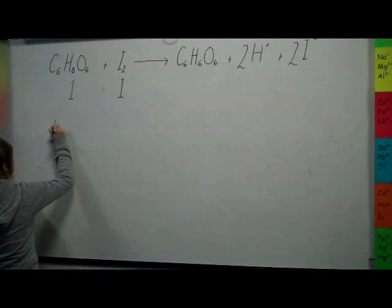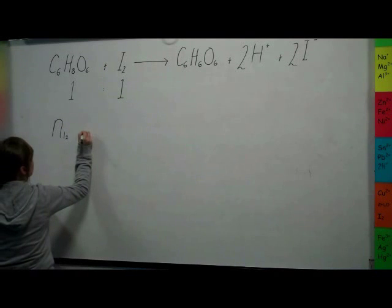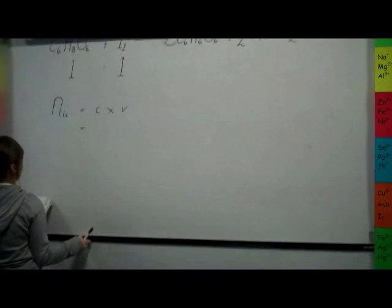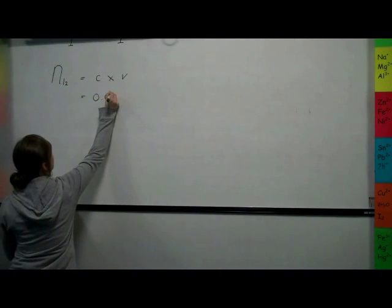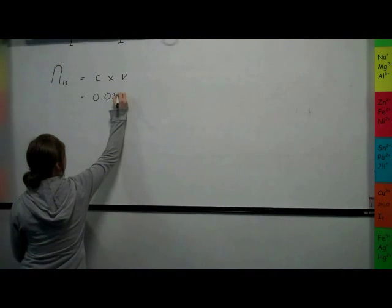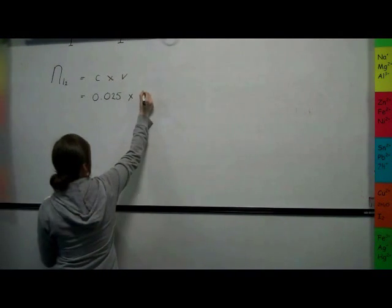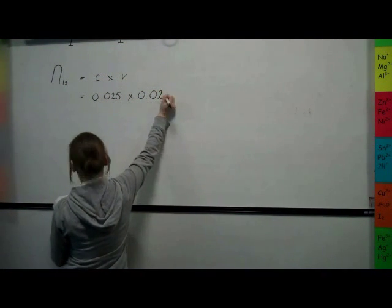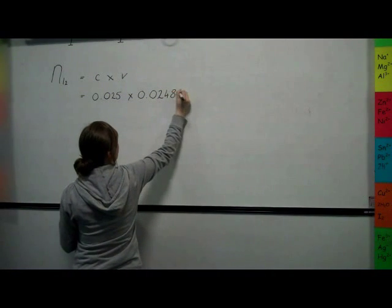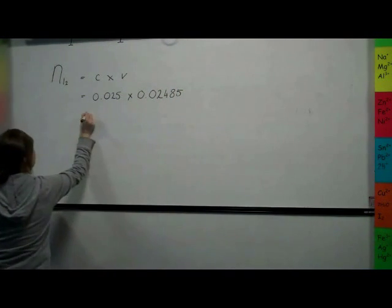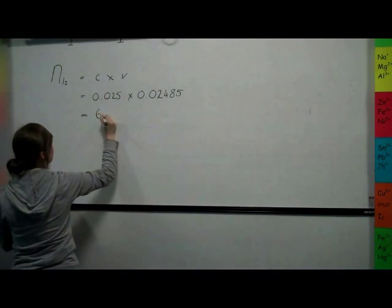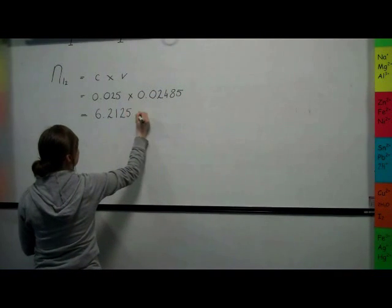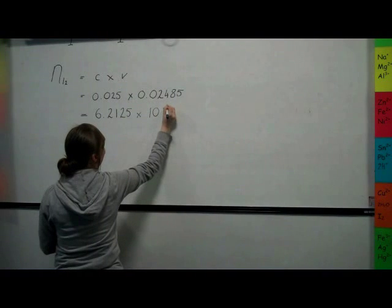The number of moles of iodine can be worked out by using the equation N equals CD. The concentration equals 0.025 moles per litre, and the volume is 25ml, which gives the resulting number of moles of 6.2125 times 10 to the power of minus 4.